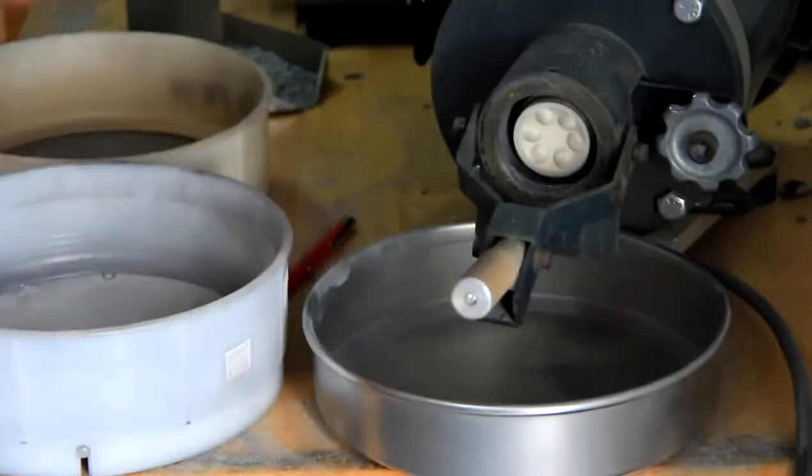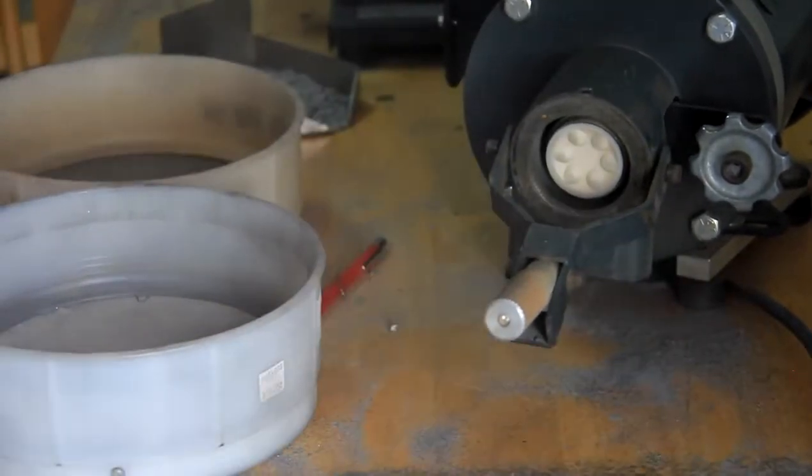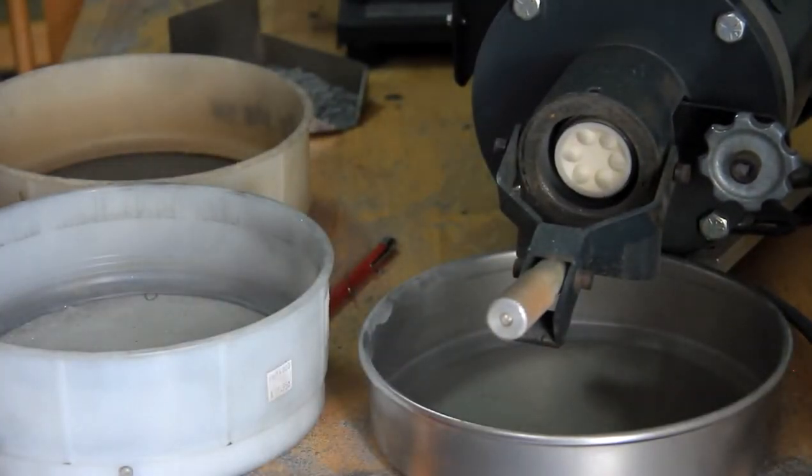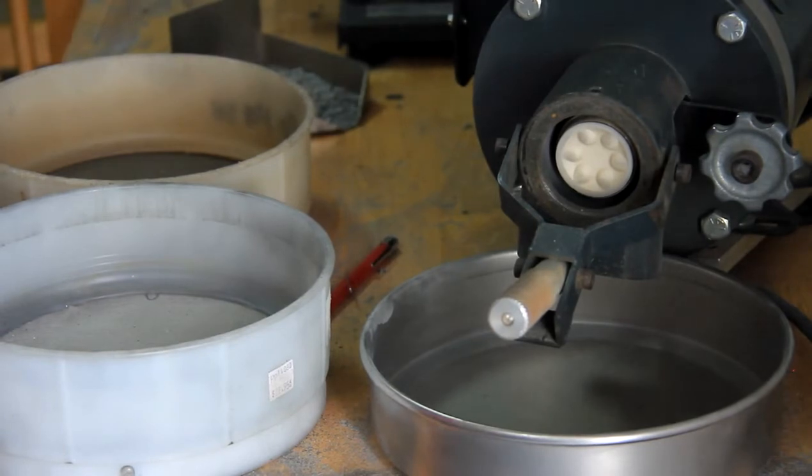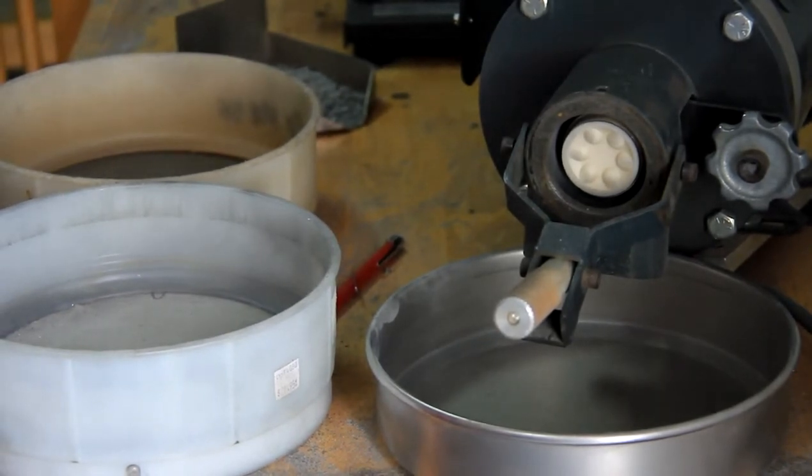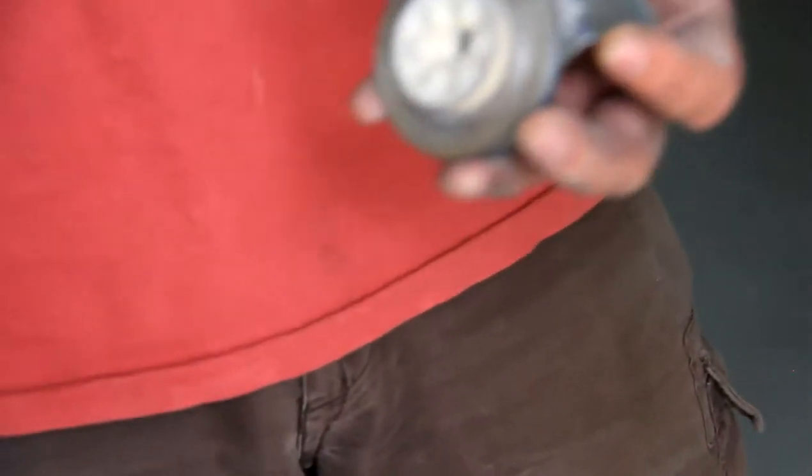So we will put it through a disc pulverizer. So all this is is two ceramic discs. One rotates very quickly. Graphite material comes down through the little hopper here into the hole.